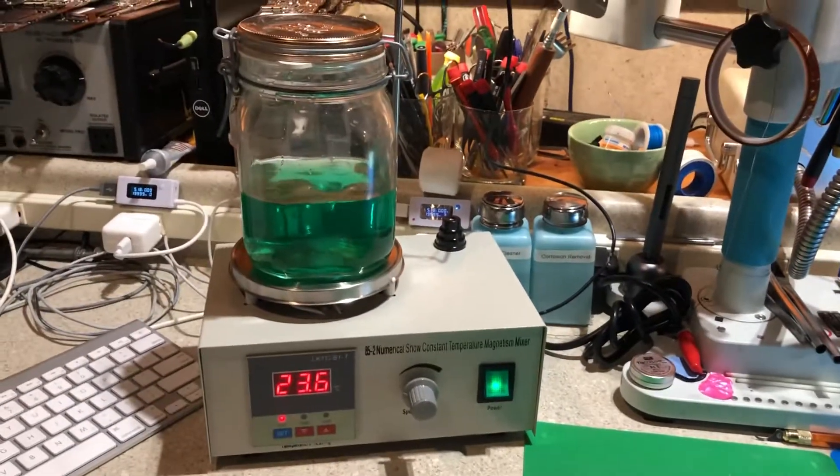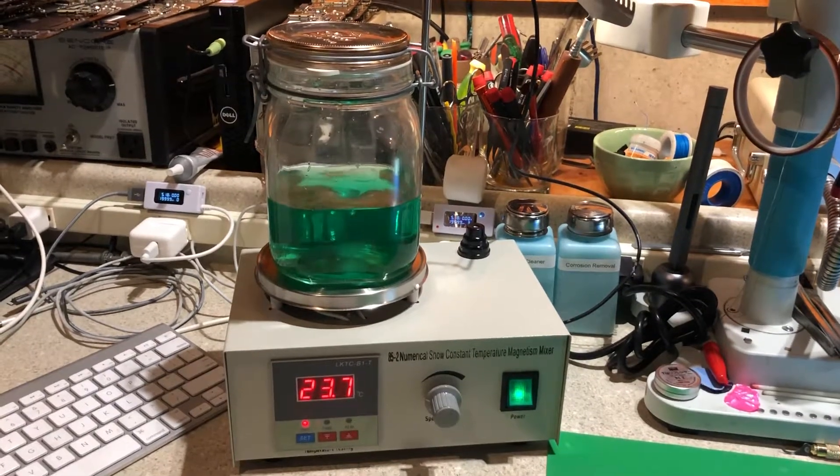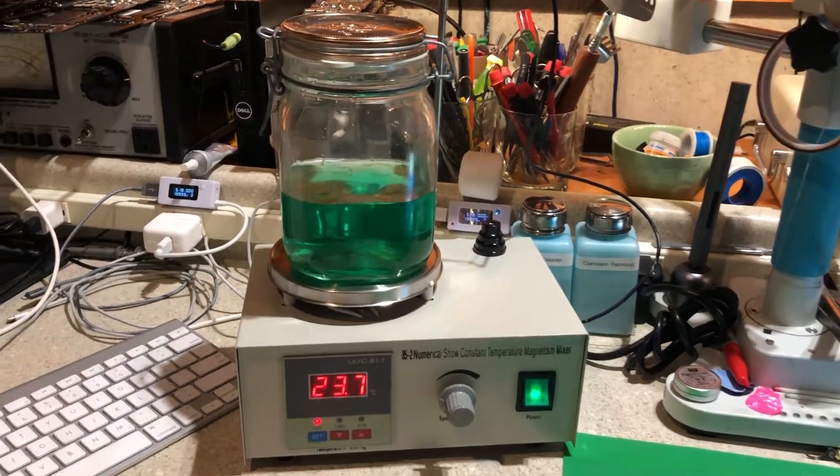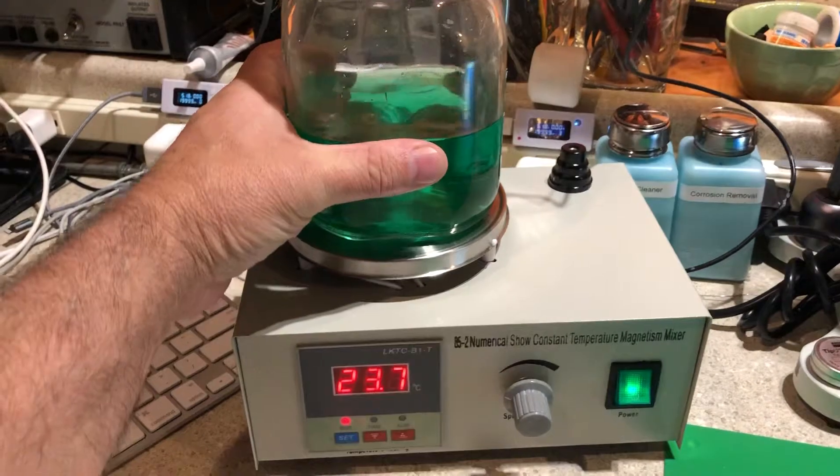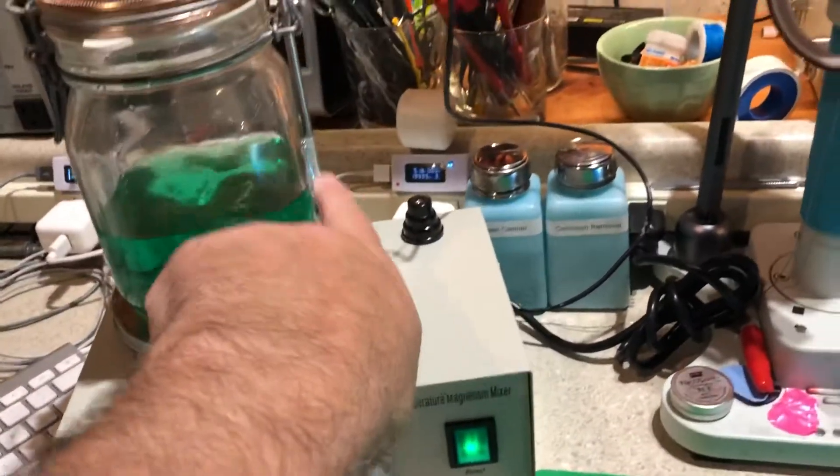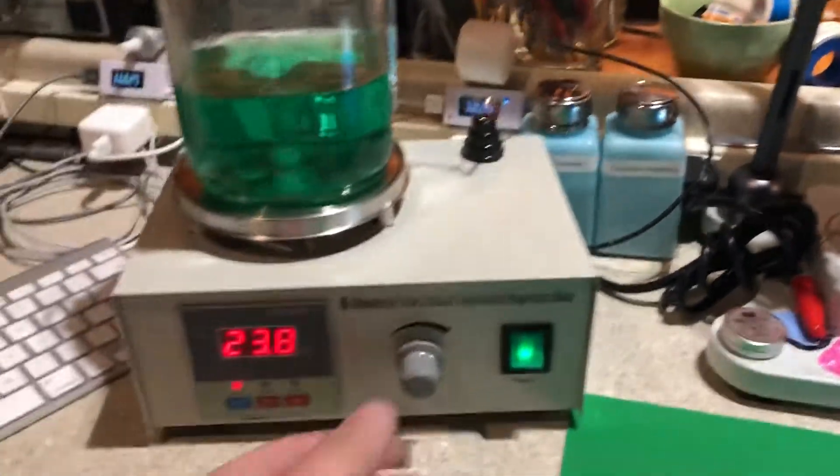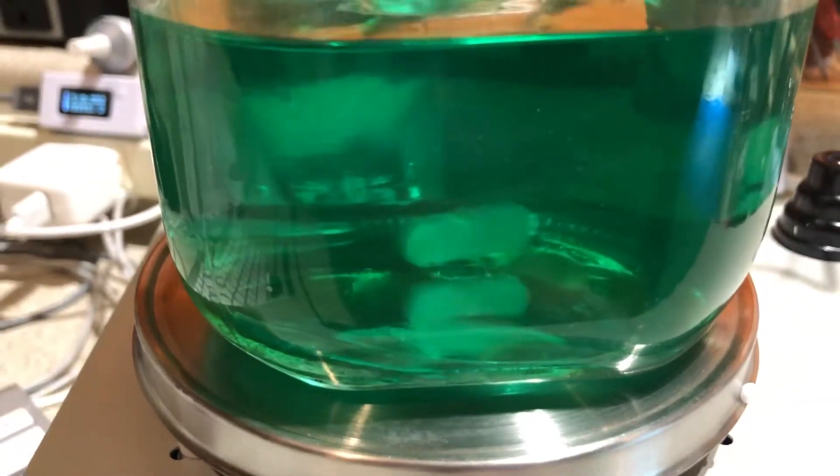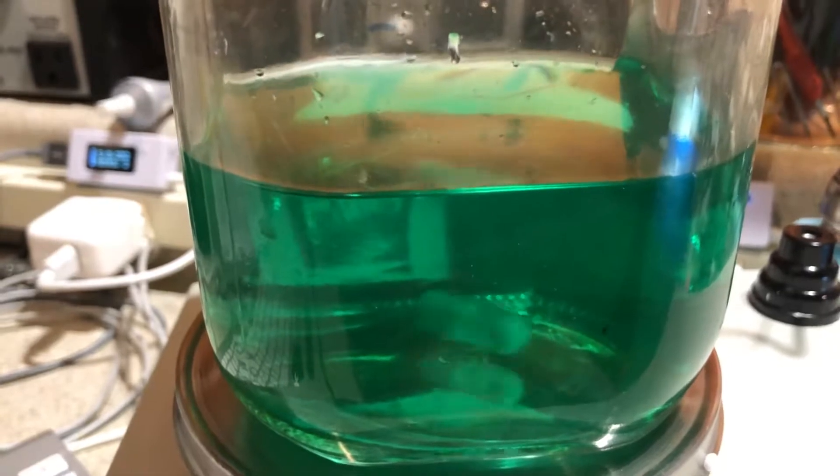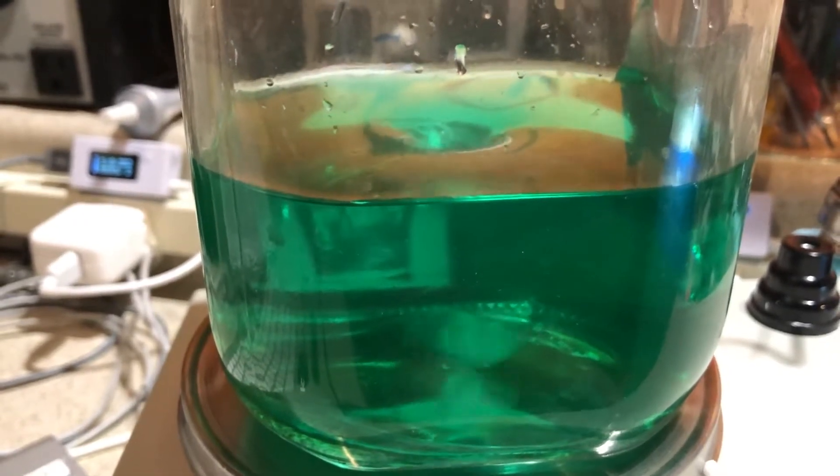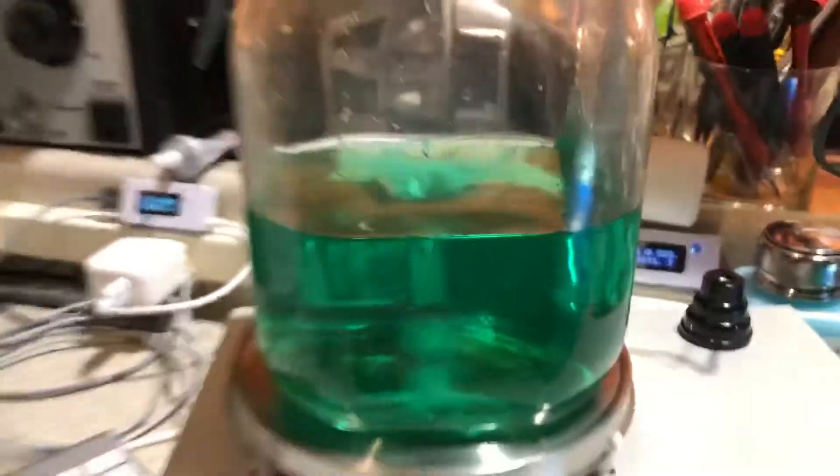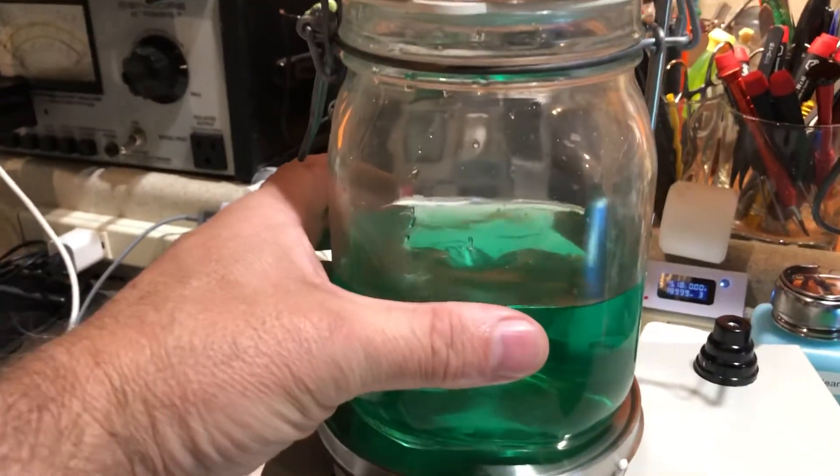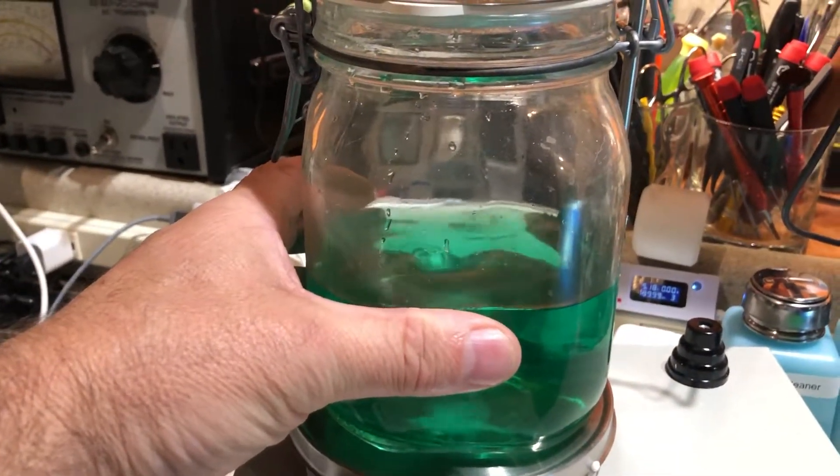This is my new electroplating setup. It works a lot better when your solution's hot. So this is a temperature probe which goes down into the machine. It's got this handy little stirring device. So here I can make it go slower or I can make it go faster. So this is my nickel solution right now. I'm just getting it hot and mixing it up.